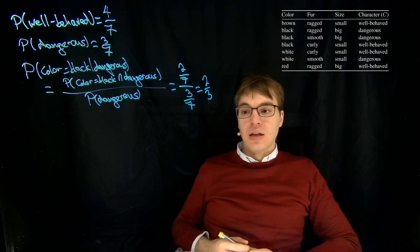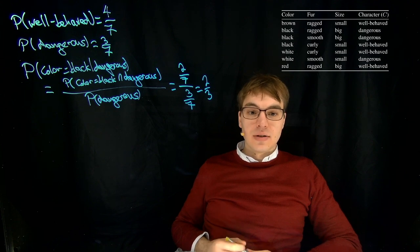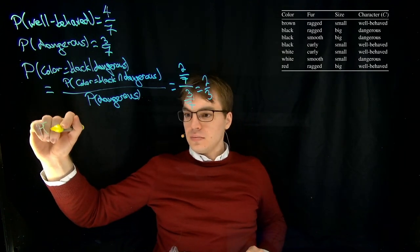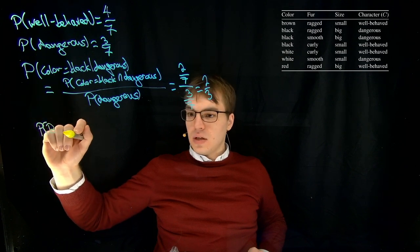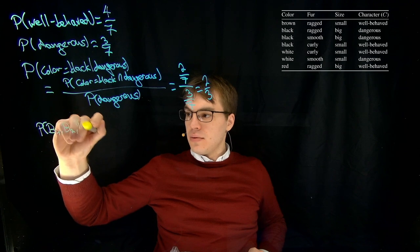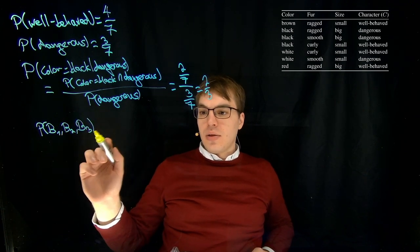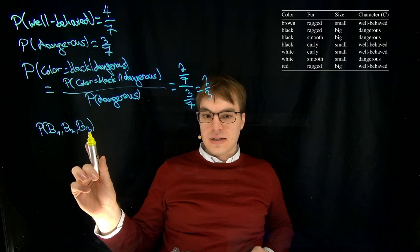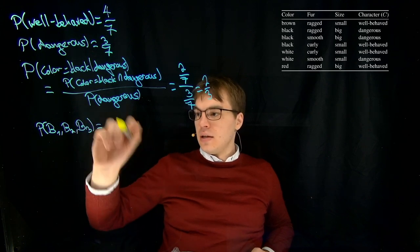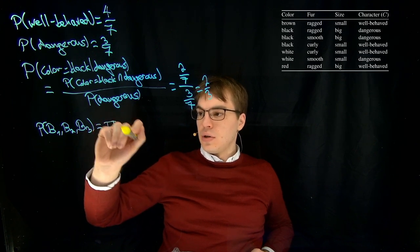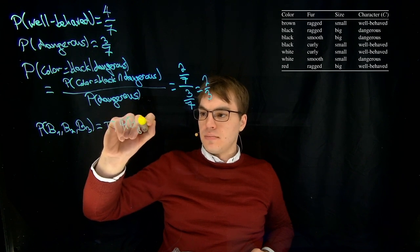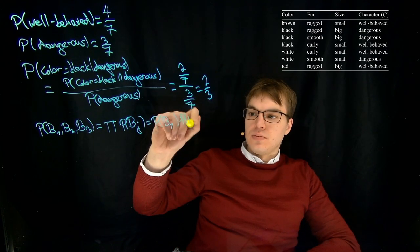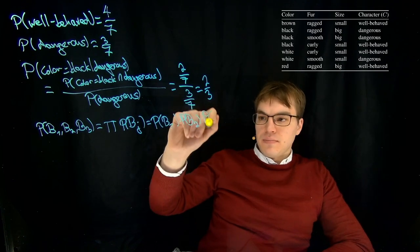For that, we want to use naive Bayes classifier. That means we are able to take a certain assumption, and this assumption is that the probability of B1, B2, B3, so the probability that all these three things apply—this is color equals black, this is fur equals ragged, and this is size equals small—is basically the product of P(B1) times P(B2) times P(B3).